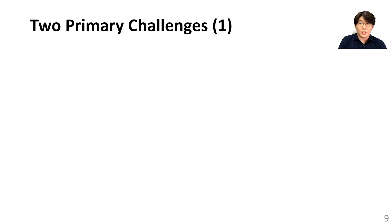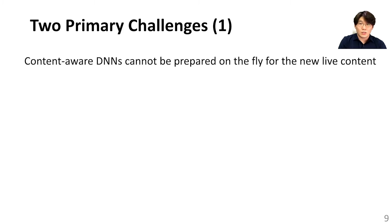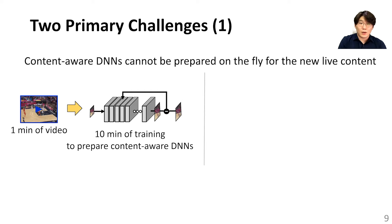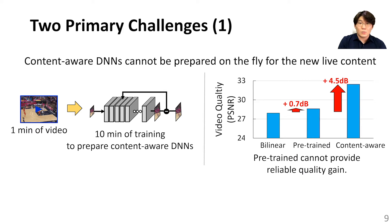However, there are two primary challenges of applying super-resolution in live streaming. First, content-aware DNNs cannot be prepared on the fly for new live content. It is known that super-resolution DNNs provide great benefit when trained and used on the same content — the content-aware approach. To prepare a content-aware DNN per video requires 10 minutes of training for 1 minute of video. This approach cannot be easily adopted for live video delivery given its stringent delay requirement. In addition, pre-training a DNN from past live sessions cannot deliver reliable quality gain compared to content-aware DNNs.